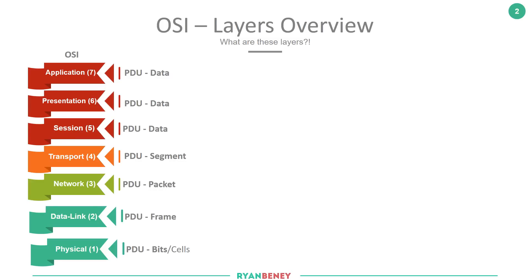We've got the overview of the Open System Interconnect model, which is the OSI, and we're going to start at layer 7 and work our way down, discussing each layer in a little more detail to give you an understanding. Once we've discussed what each layer actually does and briefly how it interacts with the layers above and below as adjacent layers, we'll then have a discussion around the encapsulation and decapsulation process, most likely in the next video.